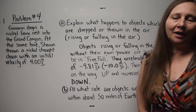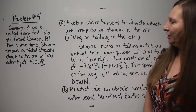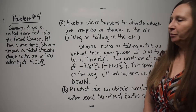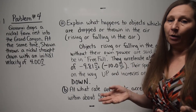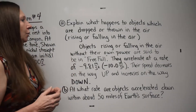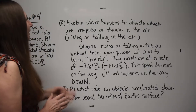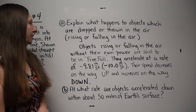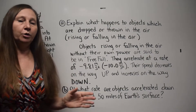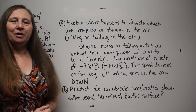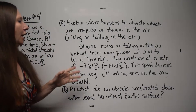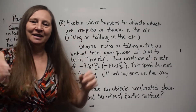Problem number 4: Giovanni drops a nickel from rest into the Grand Canyon. At the same time, Sean throws a nickel straight down with an initial velocity of 4.00 meters per second. Before we get into the problem, let's talk about what happens when an object is rising or falling through the air without its own power — we're talking about objects like rocks, not birds or airplanes.